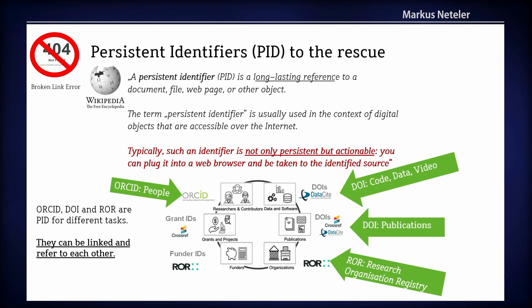There are also established standards. There are ORCIDs, which are for people — think of dog tags, for us, for me, for you. There are Digital Object Identifiers, DOIs — you can use them for code, data, video, and publications. Most of you have already seen them in scientific publications. And the new kid on the block is ROR — Research Organization Registries. That might be a thing for OSGEO in the long run; we have to discuss this. The take-home message is these are established infrastructures, and these things can be interlinked.